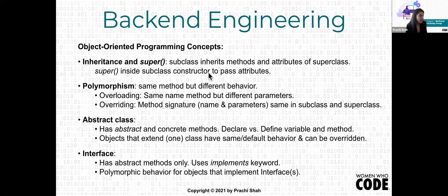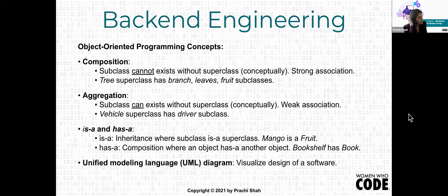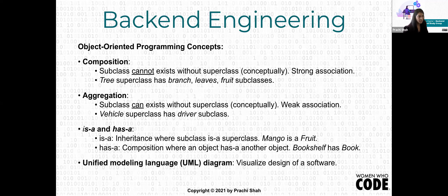Composition is when a subclass cannot exist without a superclass conceptually — there is a strong connection between them. For example, a tree is a superclass with branches, leaves, and fruit as subclasses; fruit cannot exist without a tree. Aggregation is somewhat the opposite, where a subclass can independently exist — there is a weak association. For example, vehicle is a superclass and driver is a subclass; both can exist individually but when the driver is driving that vehicle, a weak association is established.